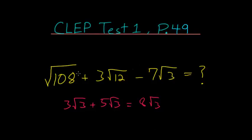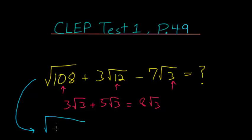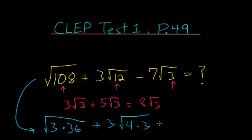With our problem, notice that they're all different, but they each share a multiple of 3 on the inside of the square root. So we can rewrite this entire expression. The square root of 108 is just the square root of 3 times 36, the square root of 12 is just the square root of 4 times 3, and minus 7 root 3 will stay the same.